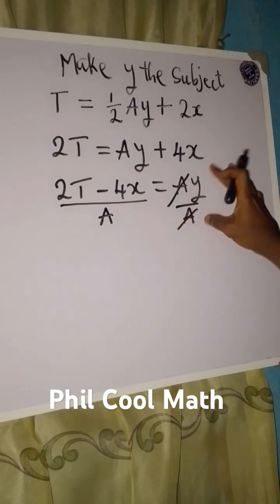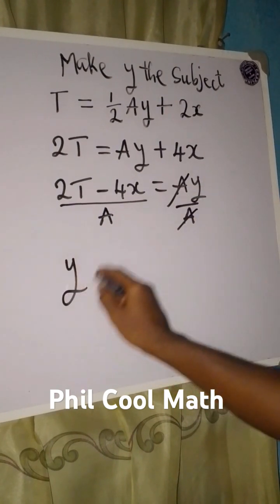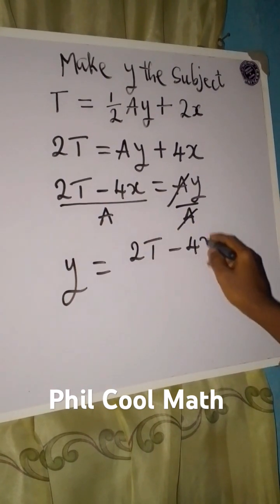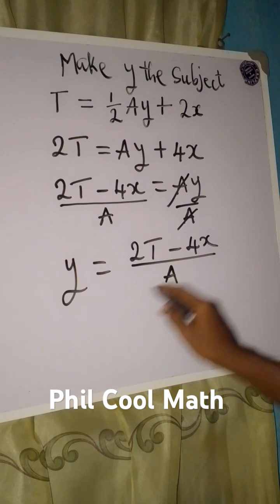This will cancel this. Now y is alone and our y is equal to 2T minus 4x all over A.